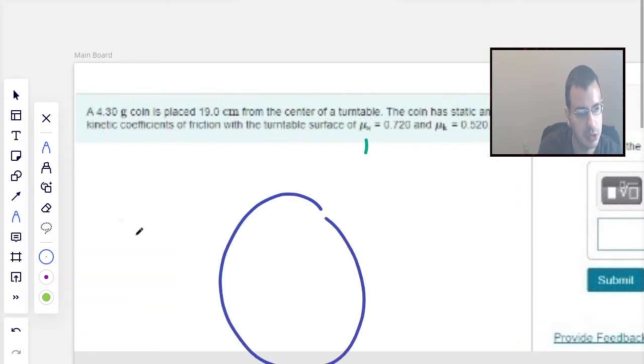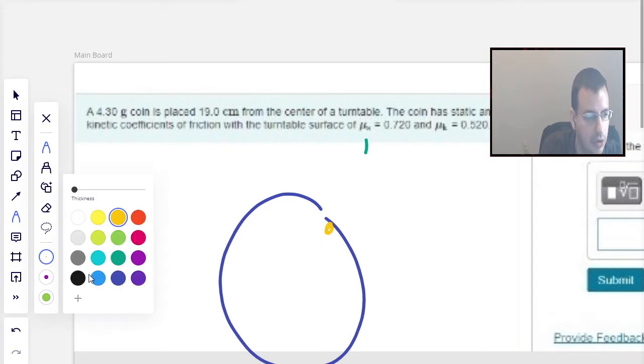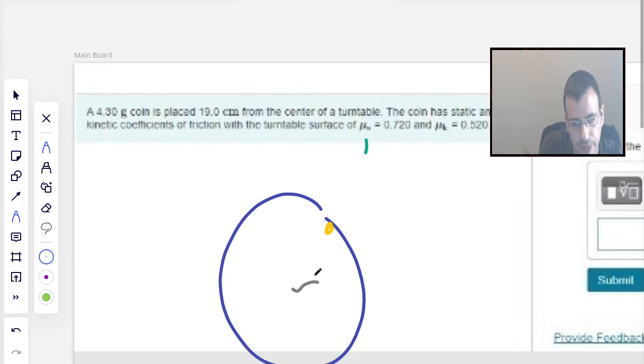I'll start by drawing a picture. In this case, we're going to do a circle, or a coin. I'm going to say it's at the edge, just to give myself more writing room. And this distance right here is going to be r.